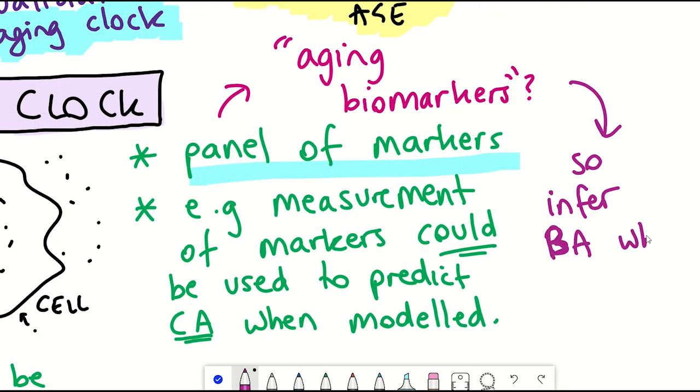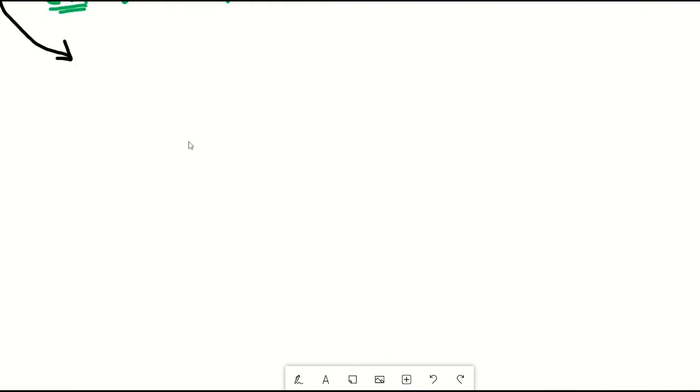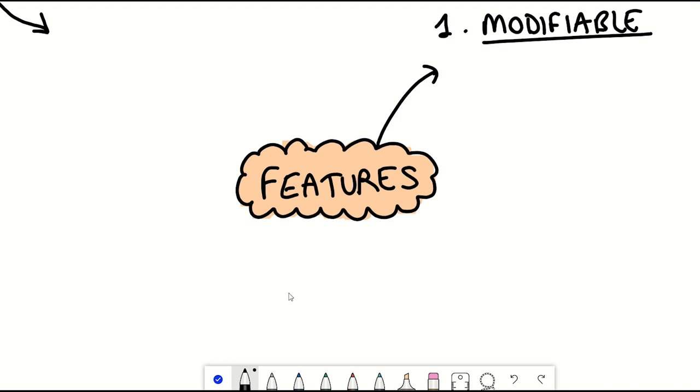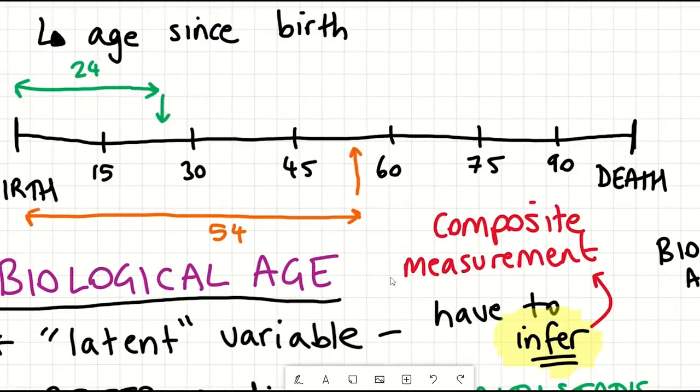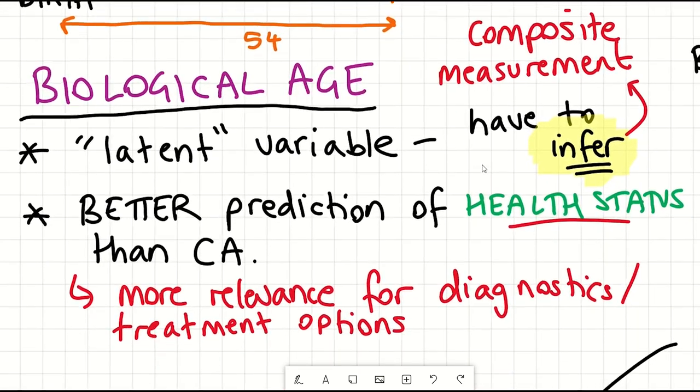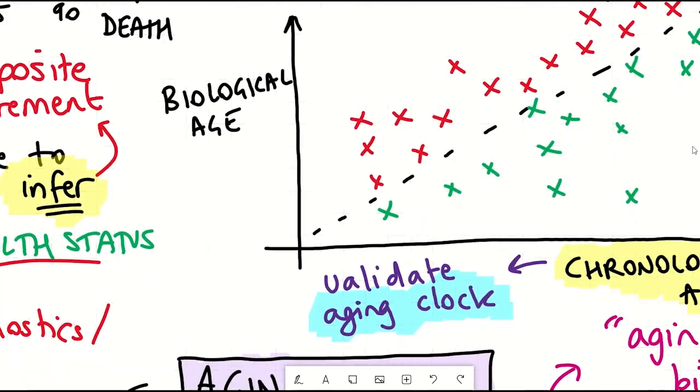Now I still don't feel like I fully conveyed the idea correctly yet. So let's have a look at some features of aging clocks that are desirable. And the first one being the idea that it's modifiable. It's something that can be intervened and altered. So my chronological age will always increase each year that I'm on planet earth. Like there's nothing I can really do about it.